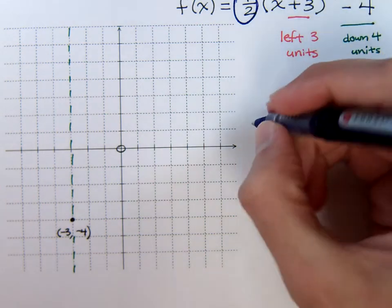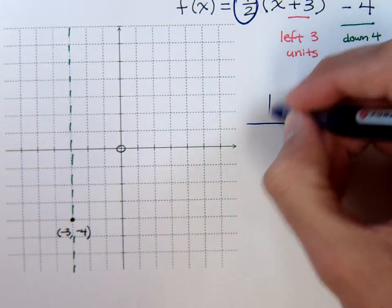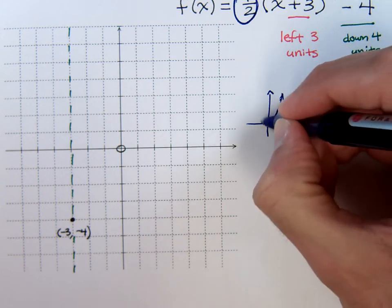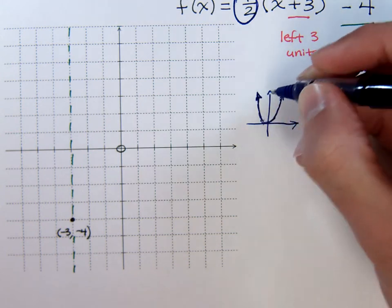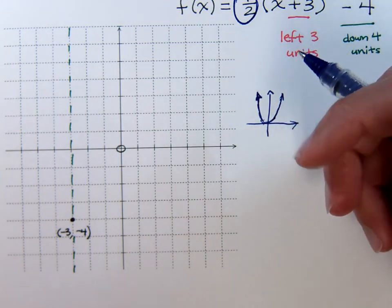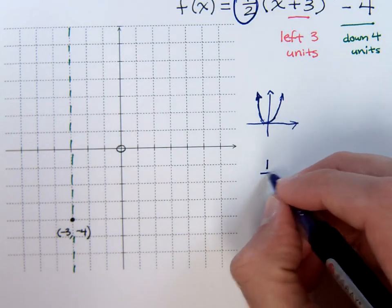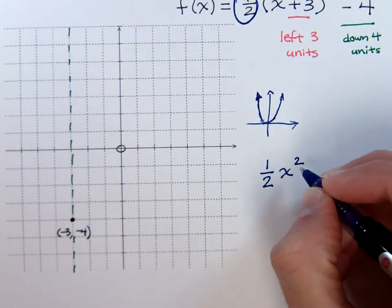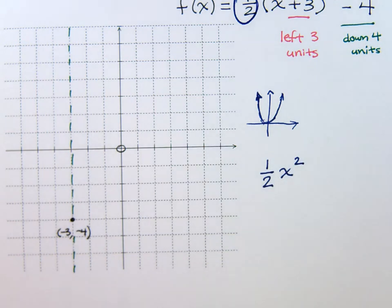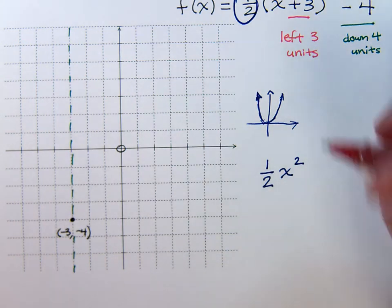The basic parabolic shape that we're used to is not going to be looking like this. It's going to be opening a little bit wider. So, if we look at this as being one half x squared, and if we remember our order of operations, we shouldn't have a problem with this.